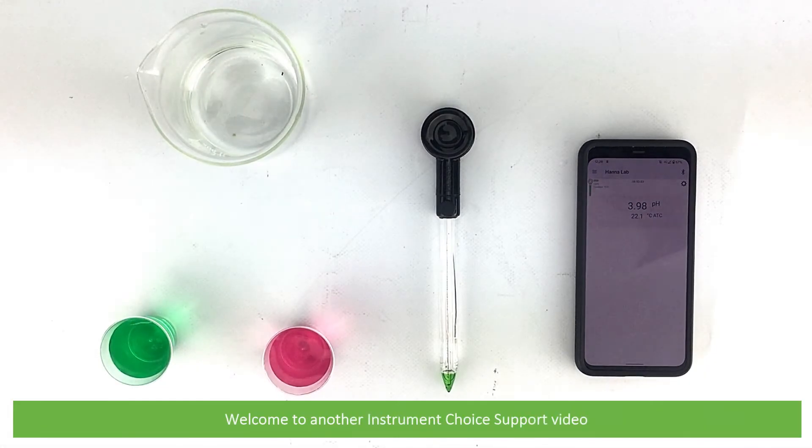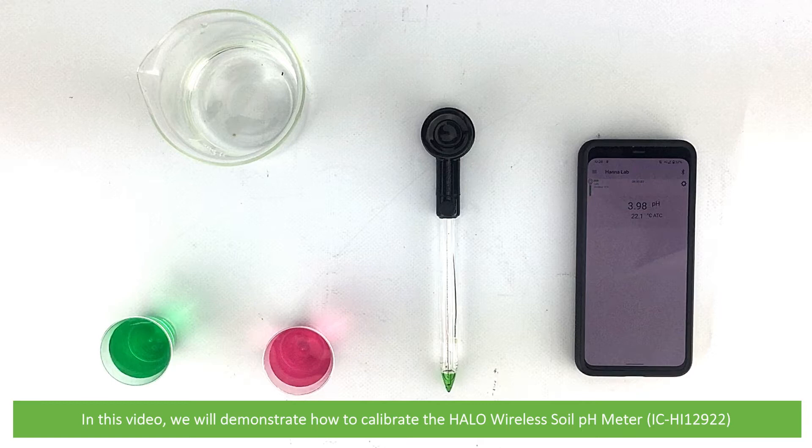Hi and welcome to another Instrument Choice support video. In this video we'll demonstrate how to calibrate the HALO wireless soil pH meter, the IC HI12922.